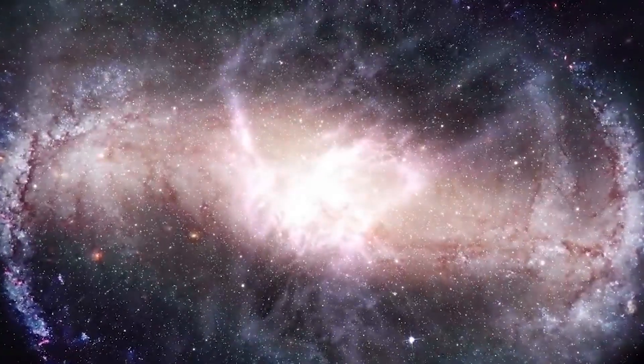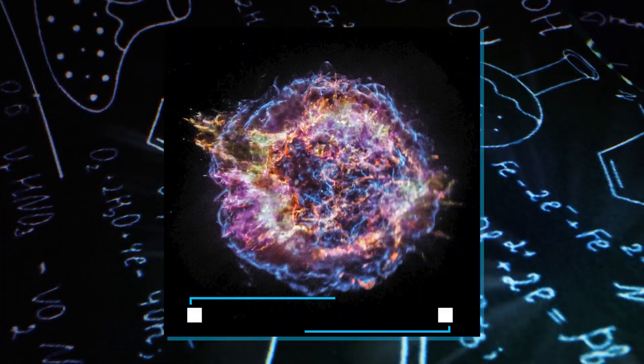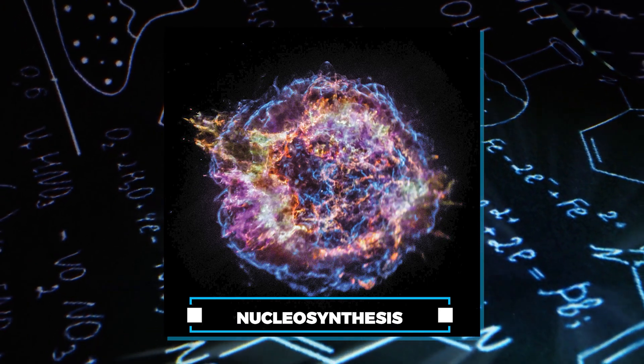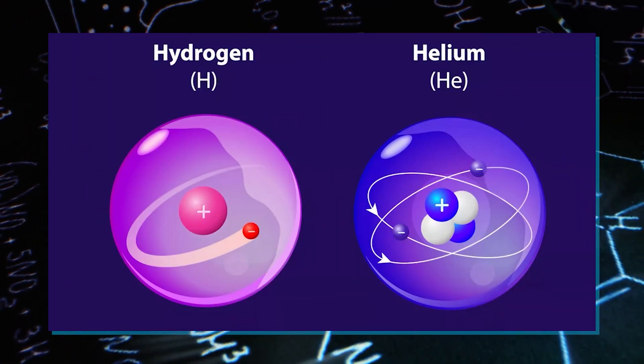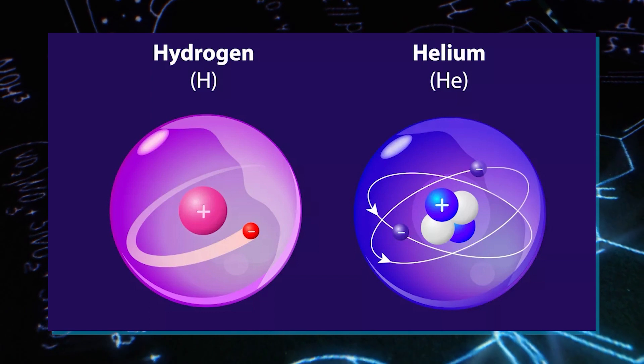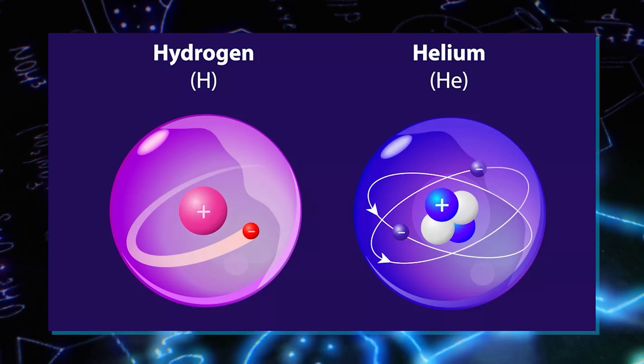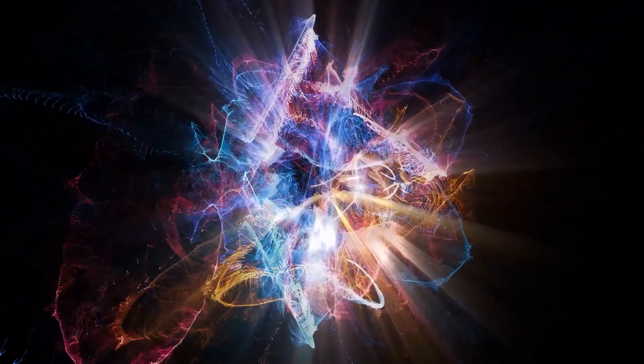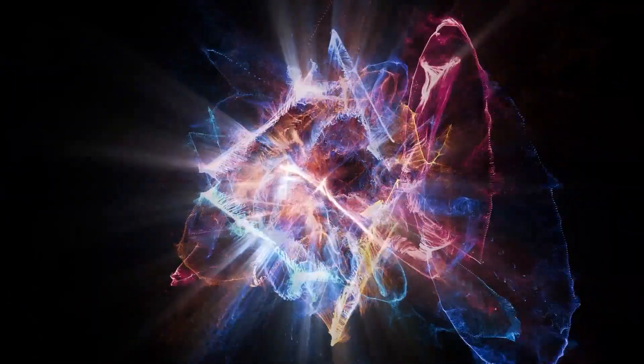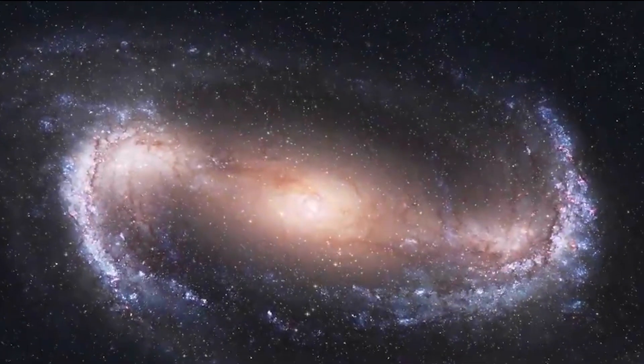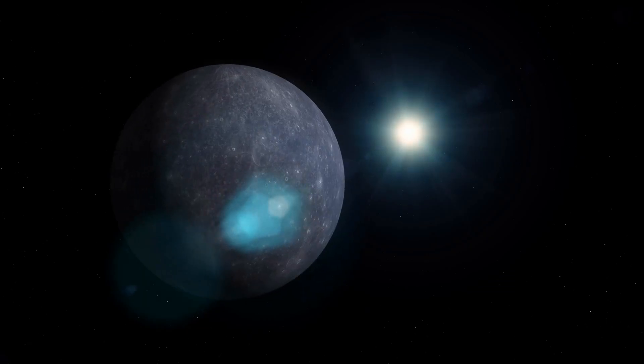Around three minutes after the Big Bang, the universe was a bit cooler, about one billion degrees or less, and something called nucleosynthesis happened. It's when simple atomic nuclei like hydrogen and helium formed in big numbers. This was a big deal because these nuclei are the basic building blocks for making everything else in the universe, like stars and planets.